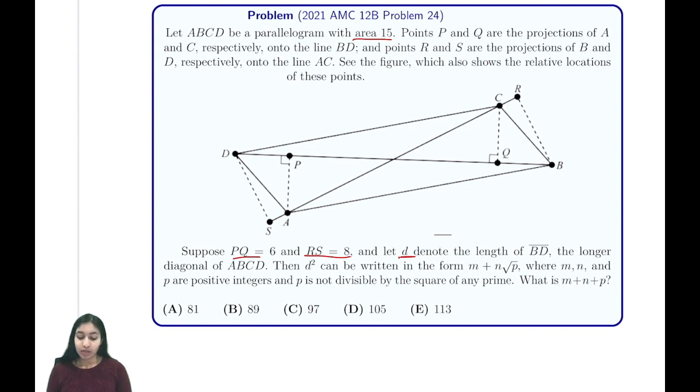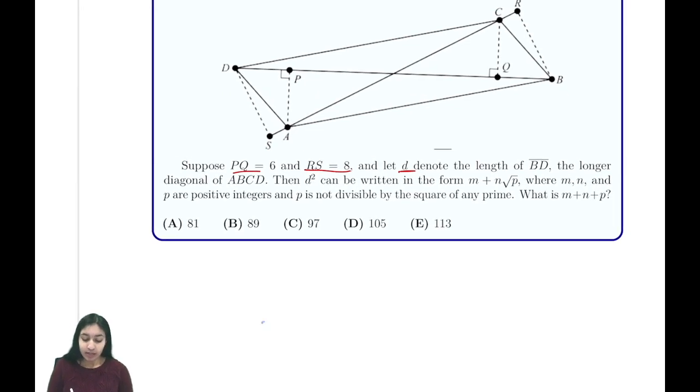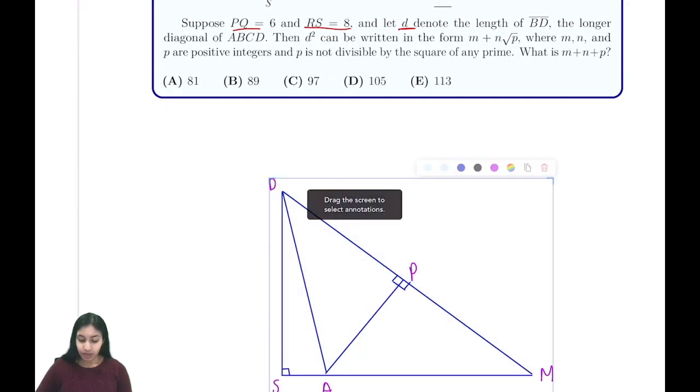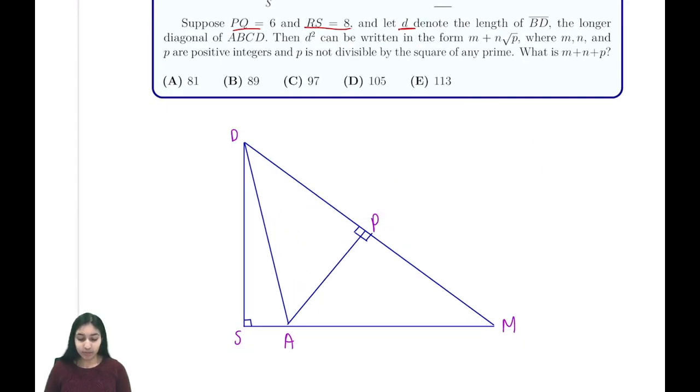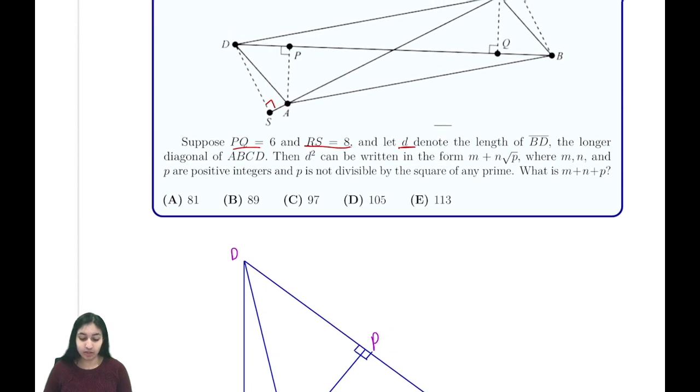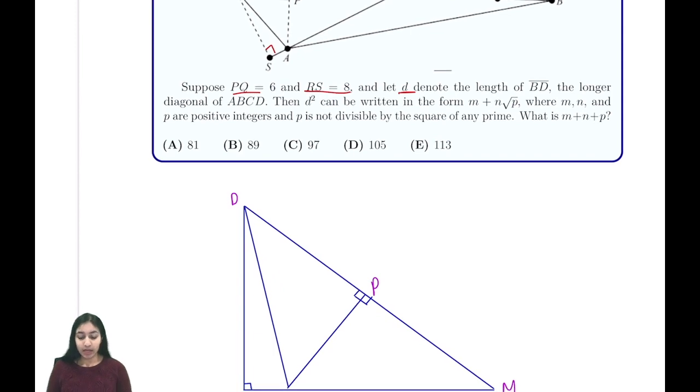What we're going to do is look at just a section of this diagram. We're going to assign the intersection of the two diagonals as point N. Here I've drawn a more specific diagram. We know that DS equals 90 degrees because it's a projection onto our diagonal.